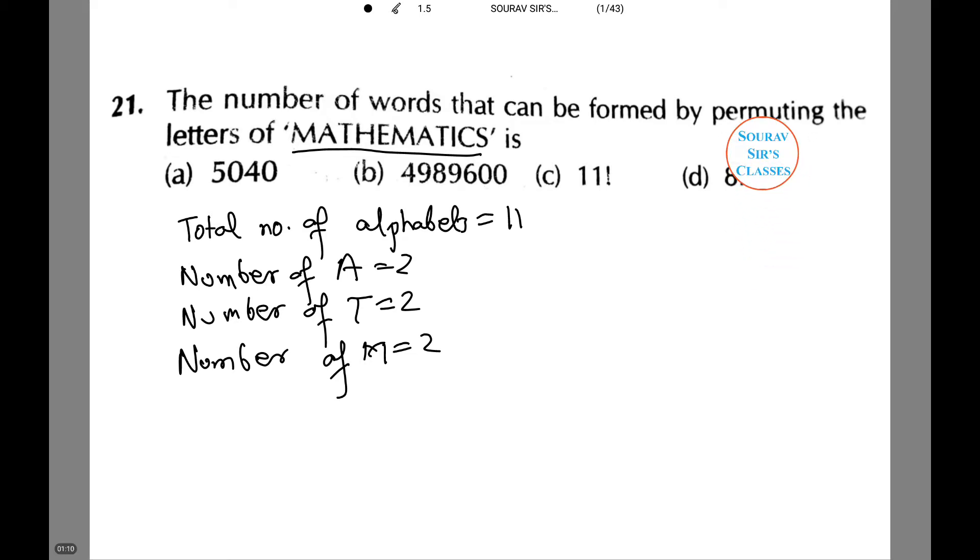Now the number of words that can be formed by permutating the letters of mathematics are, let n equal the total number of words. Thus n equals 11 factorial divided by 2 factorial times 2 factorial times 2 factorial. These are the repetitions.